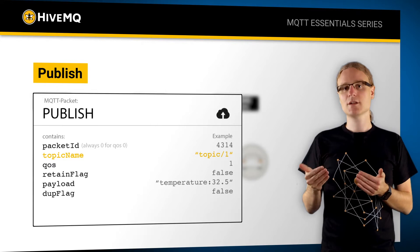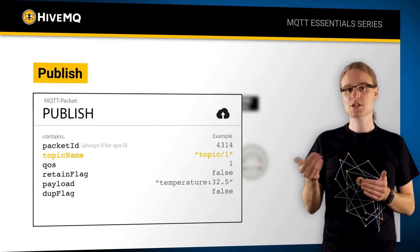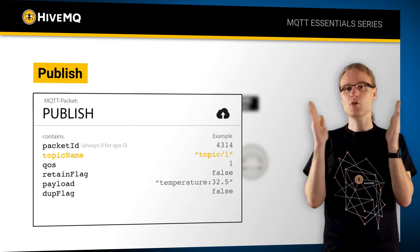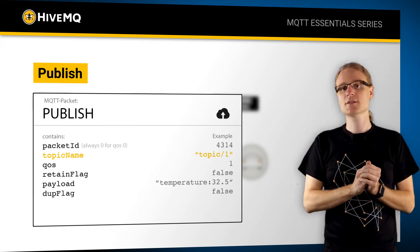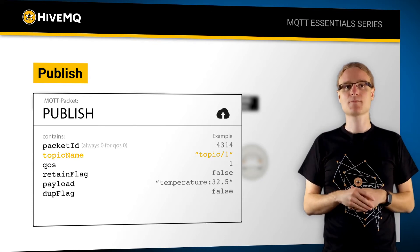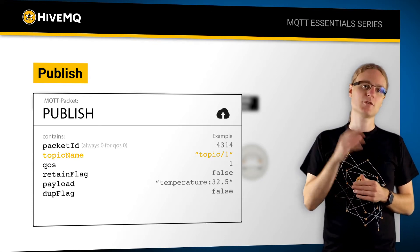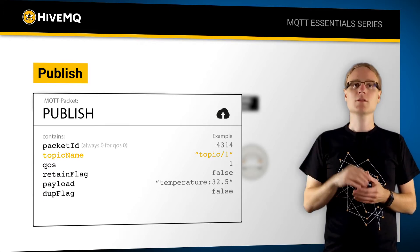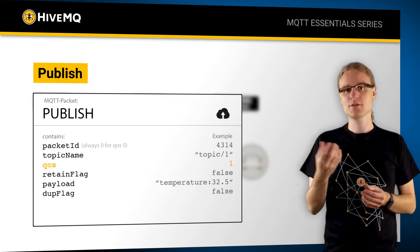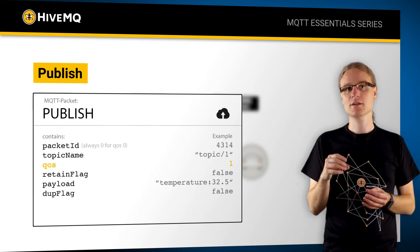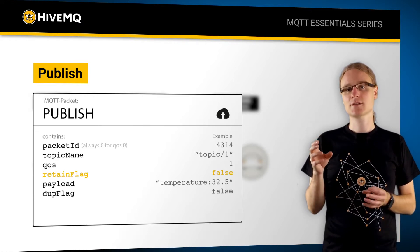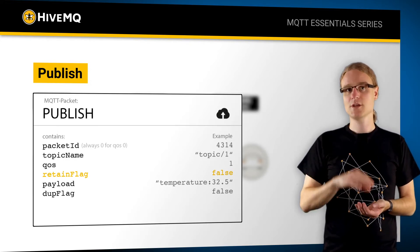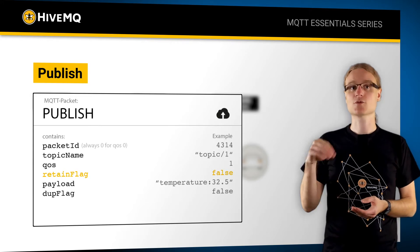How topics work in detail is covered in a separate video, but what you need to know for now is that a topic is a string with delimiters and this is a hierarchical topic, which must be provided because this is really where the data is sent to. Then we have a quality of service level, which is a unique feature covered in a dedicated video. We also have the retain flag, which is for the retain message feature — one of the most unique features of MQTT — and there is a dedicated video on how this works exactly.